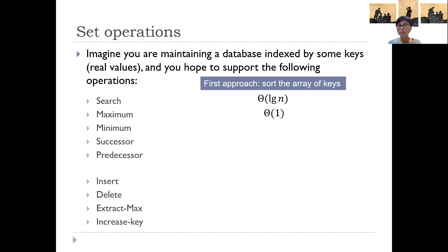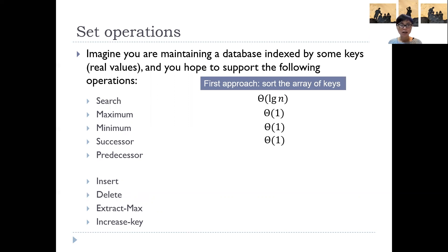We can also return the maximum and minimum easily: the maximum is the last entry in the array and the minimum is the first entry. We can also perform the so-called successor or predecessor operation. A successor of a given key is basically the element in sorted order following it, achievable in constant time. A predecessor is the element immediately before it in sorted order. So by pre-processing the database and sorting all the keys, we can answer all these operations pretty efficiently.